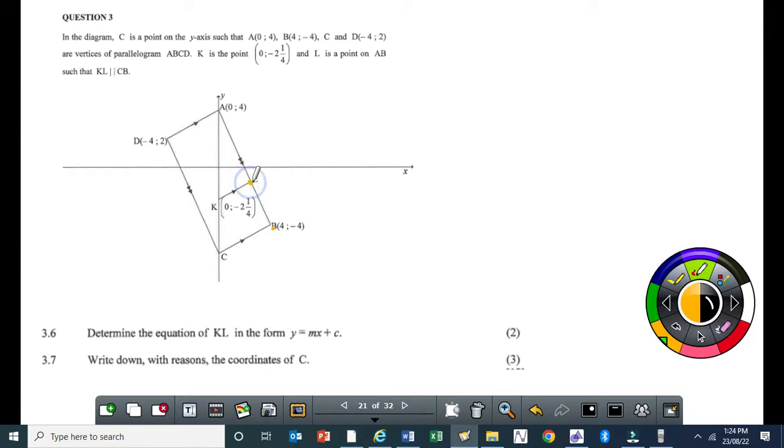Then, determine the equation of KL in the form Y equal to MX plus C. Now, we are told here that L is a point on AD. So this point here is on AD. And we are also told that CB is parallel to AD. If CB is parallel to AD, and AB is perpendicular to AD, I'm sure you can agree with me that this angle here will also be 90 degrees.